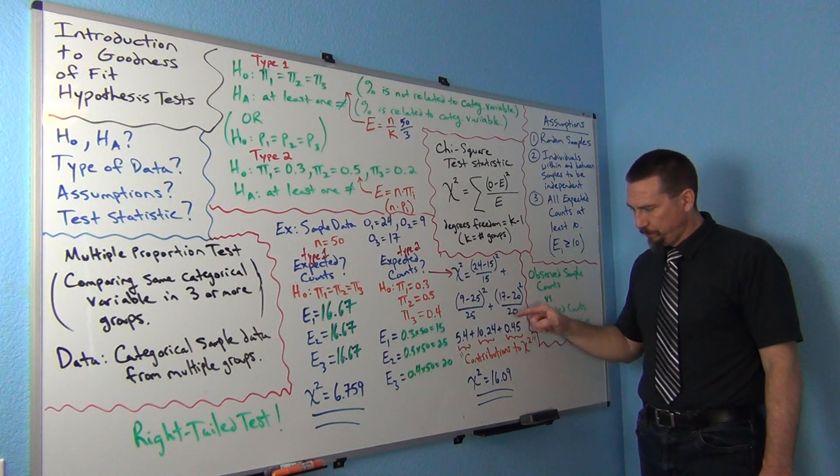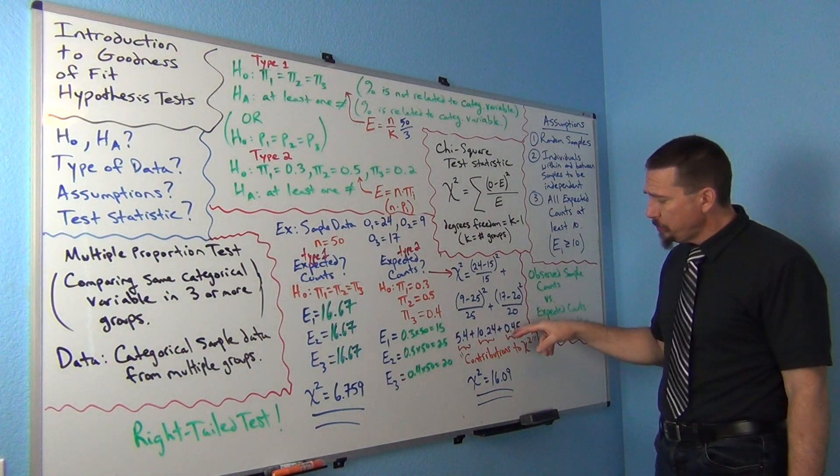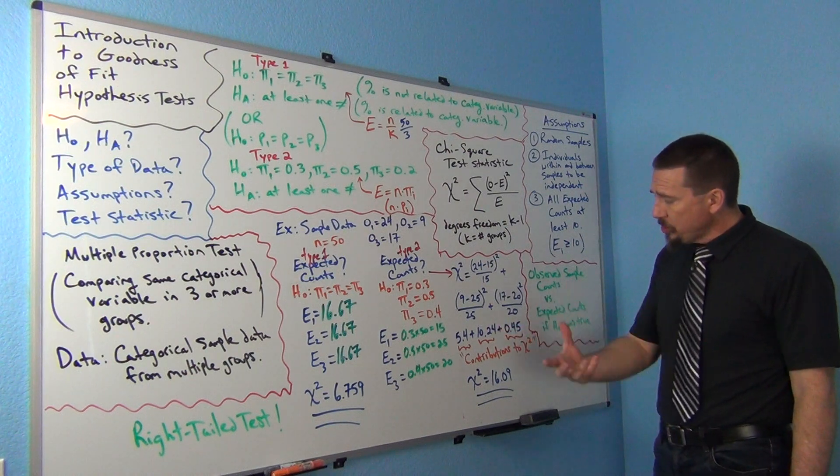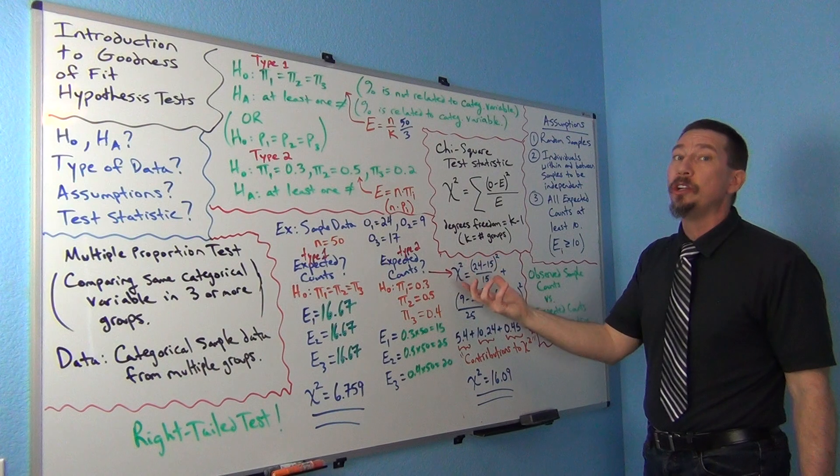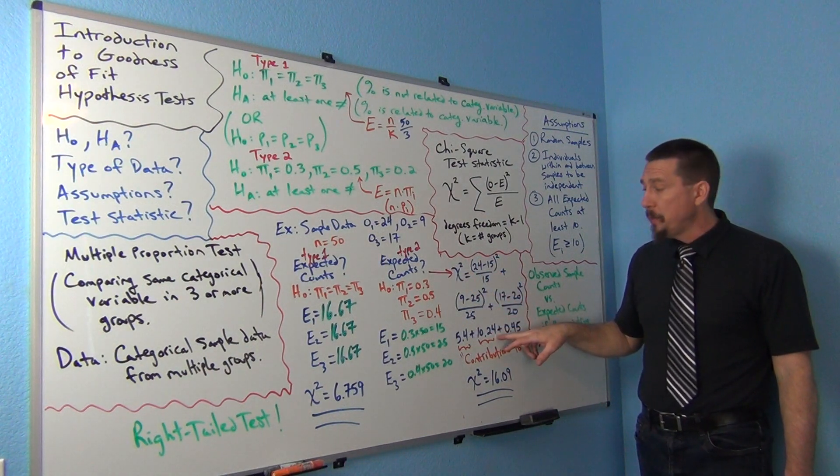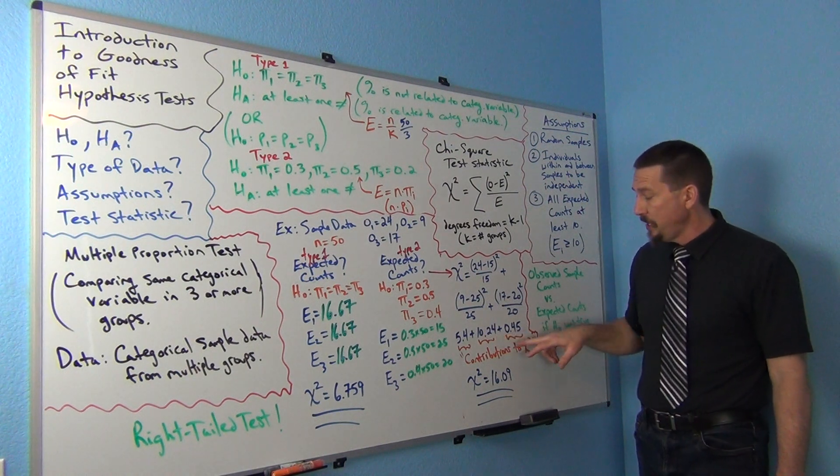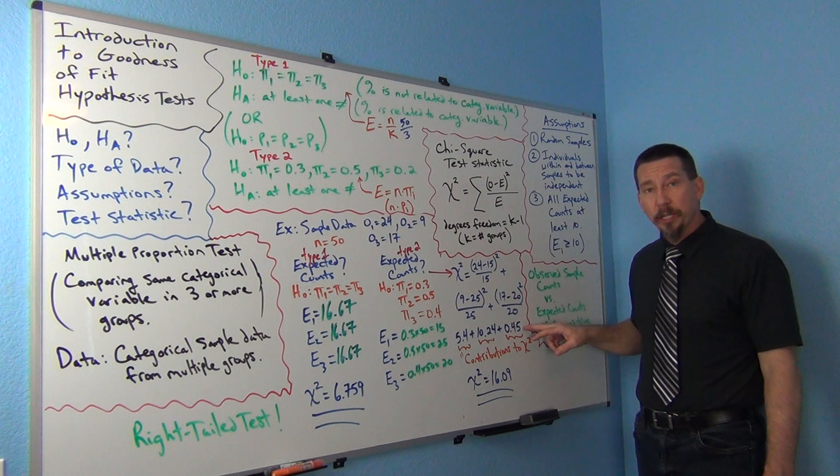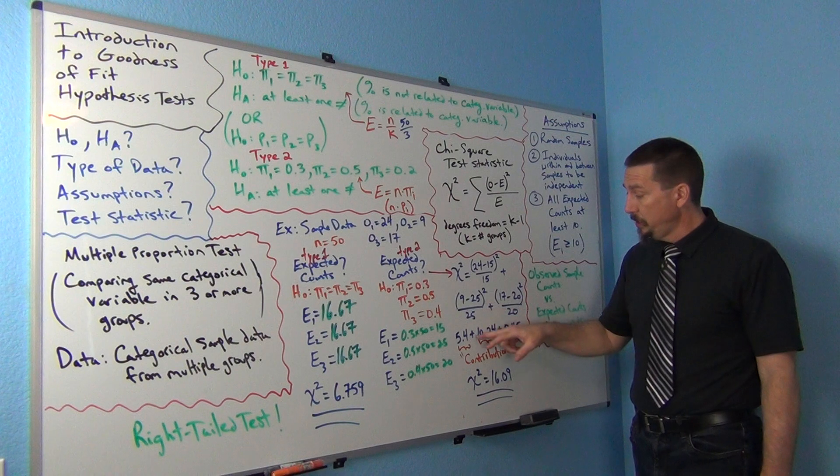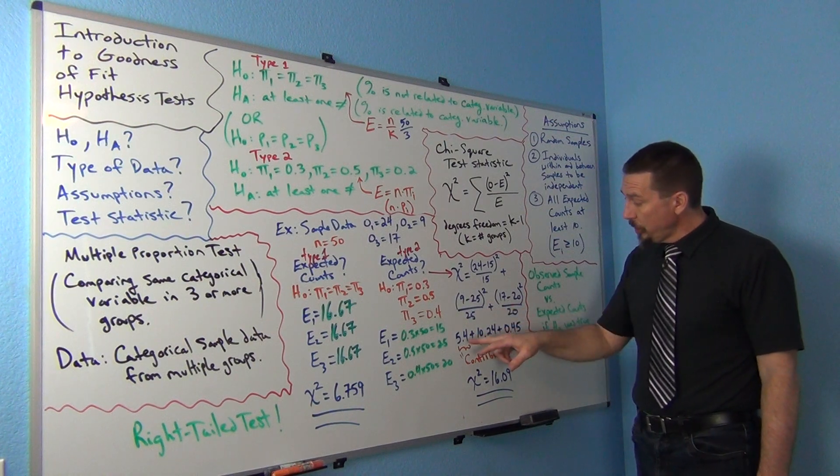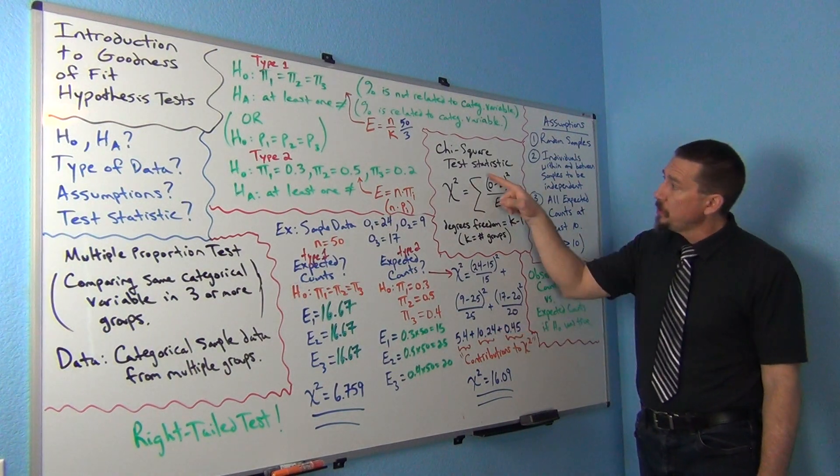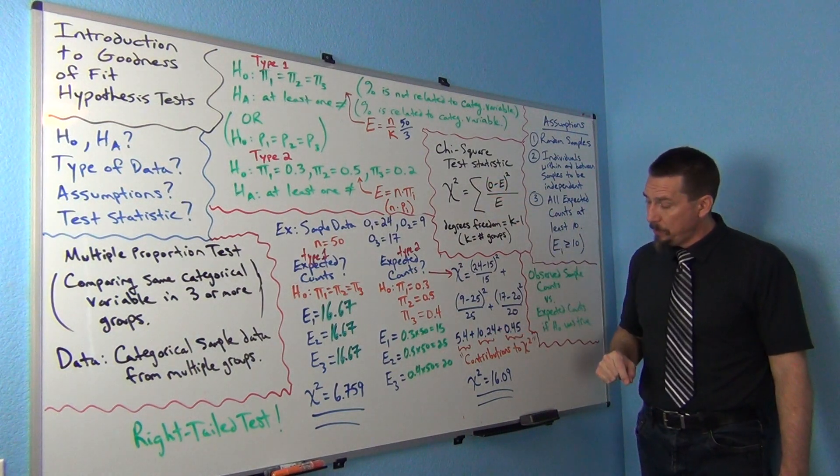I always tell my class, look at the contributions to chi-square. Oftentimes the computer will show you these numbers and you can also see which groups have the biggest discrepancy with the null hypothesis. So if you look at these numbers, you can see that group two had a much bigger discrepancy with the null hypothesis than, for example, group three. Group three, they were pretty close. Group two though had a pretty significant difference there. So that's why I always look at these numbers and look at which one was the biggest. Now if we just add those numbers together, that's what the sum in the formula means. Add them up and you get 16.09.